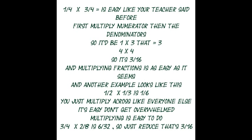1 over 4 times 3 over 4 — it's easy, like your teacher said before. First multiply the numerator, and then you multiply the denominator. So it would be 1 times 3, that equals 3. 4 times 4 — so it's 3 over 16. And multiplying fractions is as easy as it seems.